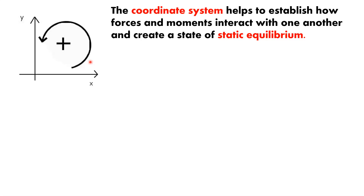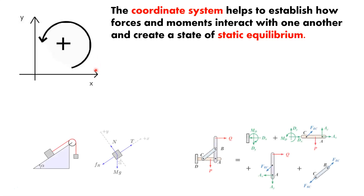You can change the coordinate system as needed based on the circumstances, but once you've established it you have to abide by it — otherwise your balance sheet won't work out and you won't reach static equilibrium. It's not unusual to rotate your coordinate system to make things easier, but it has to keep track of everything going on. For less straightforward problems, having a coordinate system is where you really benefit.